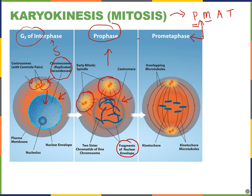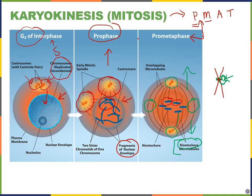In pro-metaphase, structures called kinetochores form on the chromosomes near the centromere. Microtubules coming out from the centrosome that attach to these kinetochores are called kinetochore microtubules, and they work to align the chromosomes in their proper location. Some microtubules coming out from the centrioles do not bind to any chromosomes — their job is to elongate the cell.